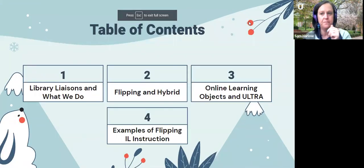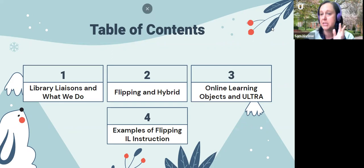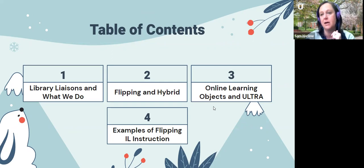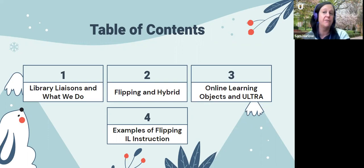We're going to go over what we do as library liaisons, talk about flipping, hybrid, and blended — what's the difference between the three? We'll talk about things the library is doing in terms of online learning objects and research tutorials, and then go over specific examples of either what we're doing or planning to do with both face-to-face and virtual classes as models.